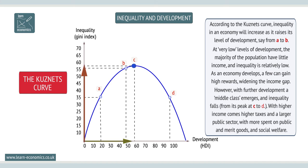However, with further development, a middle class emerges and inequality falls from its peak at C to D. Higher income means higher taxes and a larger public sector, where more is spent on public and merit goods, and on social welfare.